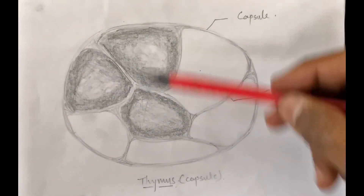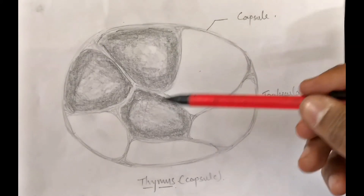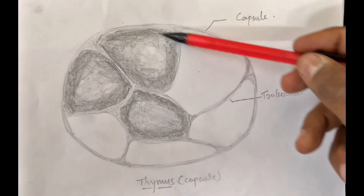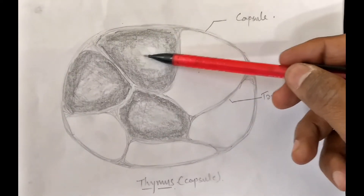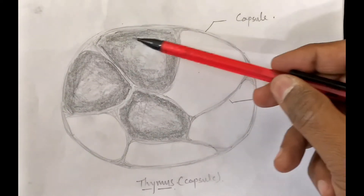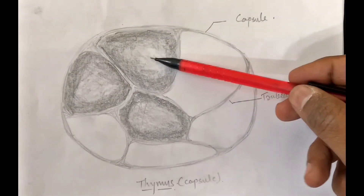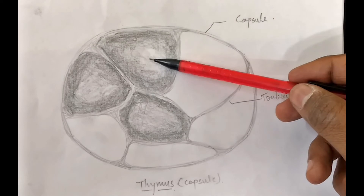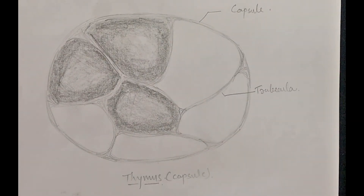Now we will go into the details of the thymic lobule. Here I have drawn three of these lobules. As we can observe, each lobule consists of two portions: this peripheral portion is somewhat darker, and this central portion is somewhat paler. The darker portion is known as the cortex, and the central pale area is known as the medulla.